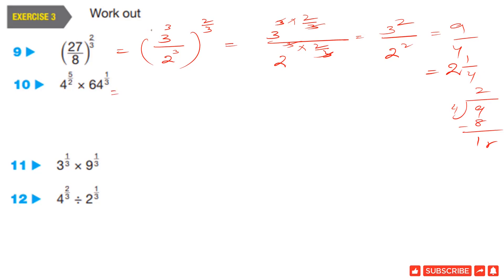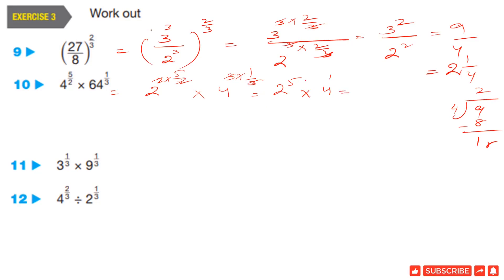Question 10: 64 power 5 by 3. Since 4 times 4 is 16 and 16 times 4 is 64, we have 4 power 3, which equals 2 square power 3. So 64 power 5 by 3 becomes 2 power 2 times 3, whole power 5 by 3. The 3 cancels and the 2 cancels, giving 2 power 5 times 4 power 1. Multiplying, 2 power 5 is 32 times 4 gives 128.